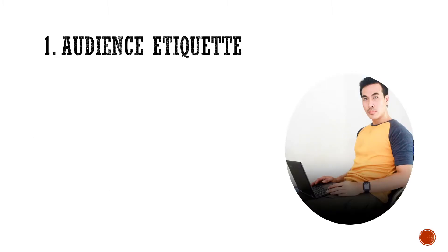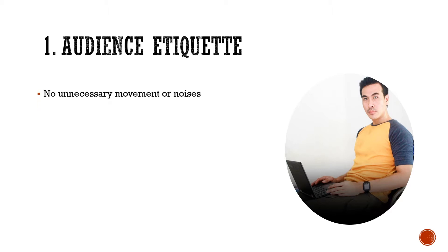Element number one is audience etiquette. As an audience, we have rules or regulations that should be followed. For example, no unnecessary movement or noise. No cell phones, talking, standing, or walking in the theatre.